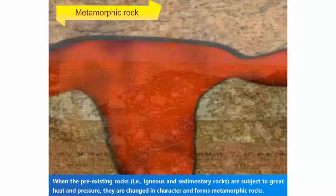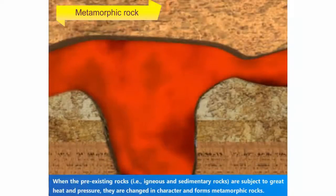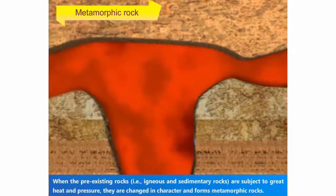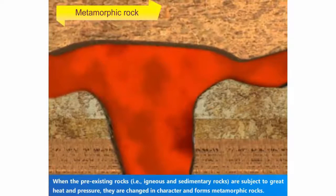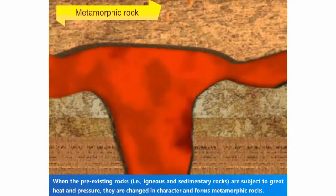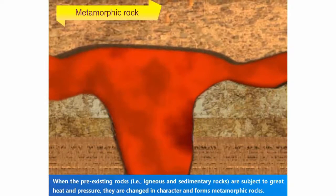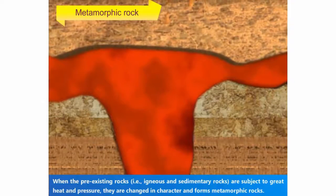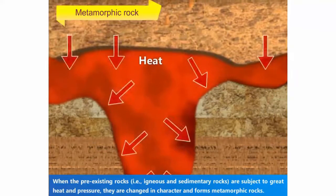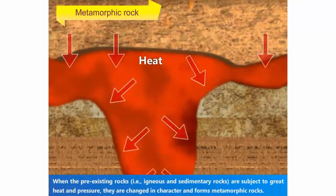When pre-existing rocks are subject to great heat and pressure, they are changed in character and form metamorphic rocks. Due to heat and pressure, granite changes to gneiss.